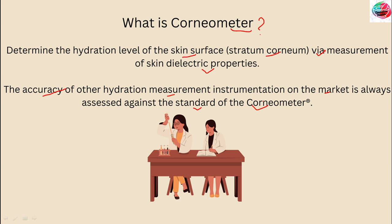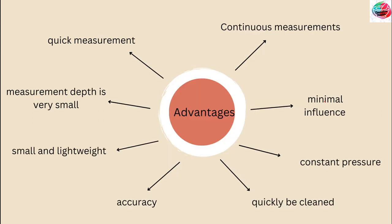The Corneometer is considered the standard for other skin hydration measurement instruments available in the market. Among its advantages: the probe allows very quick measurement — just one second — which helps avoid occlusion. Continuous measurements over a longer period can be optimally performed. Substances on the skin such as salts or residues of topically applied products have only minimal influence, due to the capacitance measurement principle.